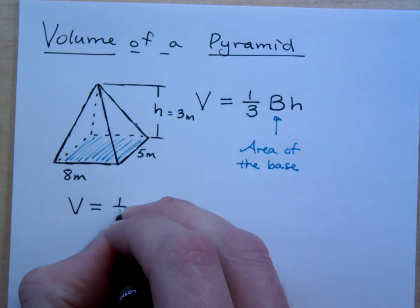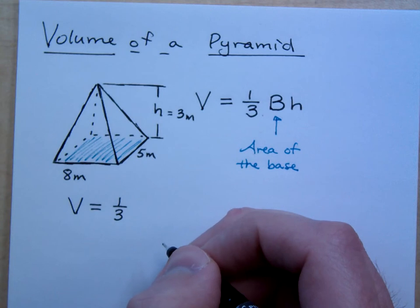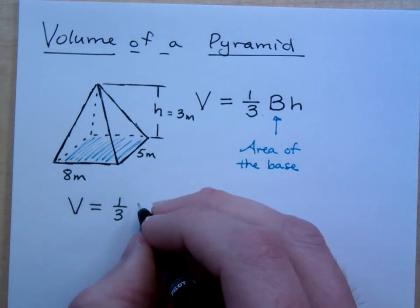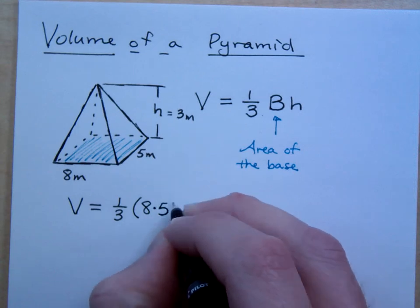I could find the volume of this very easily because I've got a formula. So, the volume is one-third. How do I find the area of the base? Because what's big B? How do I find that? 8 times 5. Right. The base is just a rectangle, right? So, this is going to be 8 times 5. And what's the height?